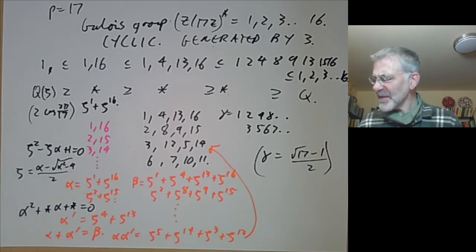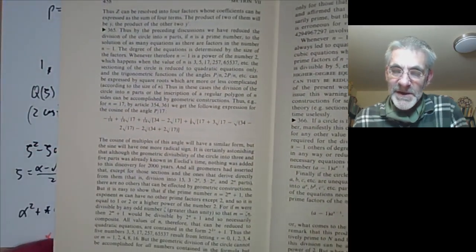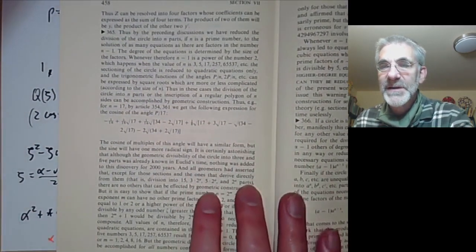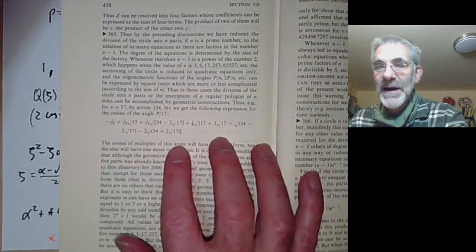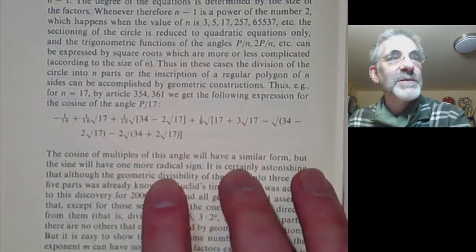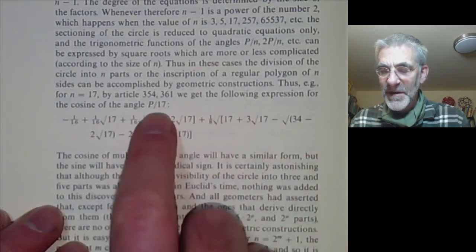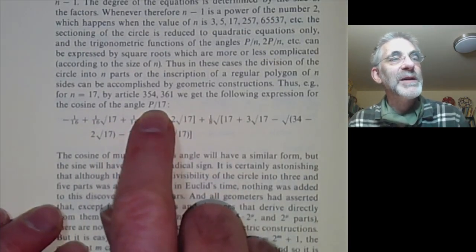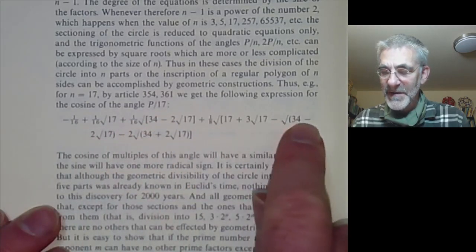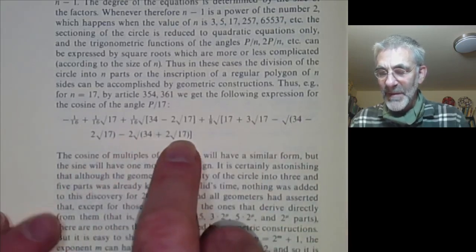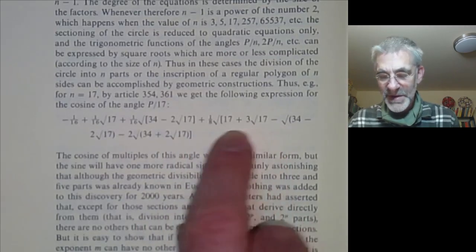Writing it out explicitly is a little bit of a mess. Gauss has already done it in his famous book on number theory, the Disquisitiones Arithmeticae. If you go almost to the end — about two or three pages from the end — here we have Gauss's expression for the cosine of the angle 2π/17, where p is Gauss's notation for 2π. You can see the square root of 17 turning up repeatedly, expressed in terms of repeated nested square roots.